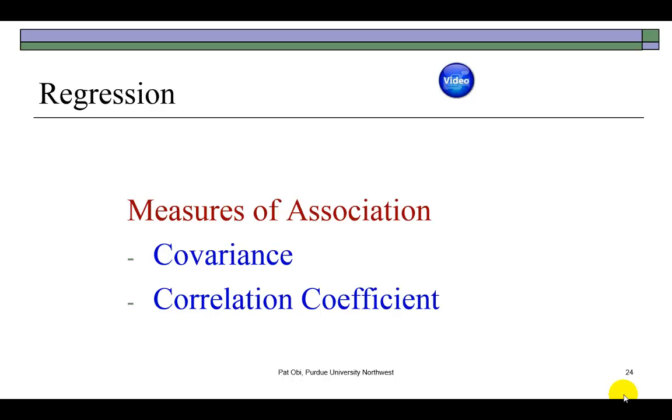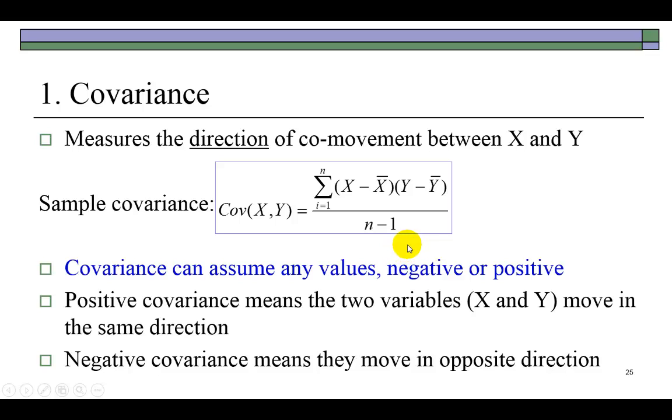Two measures of descriptive statistics that come out of a regression study are covariance and correlation coefficient. These are measures of association and do not necessarily tell us about the relationship between the two variables or for that matter if there is causality from one variable to the other. So covariance is defined as I show here and measures the direction of the co-movement between the two variables x and y.